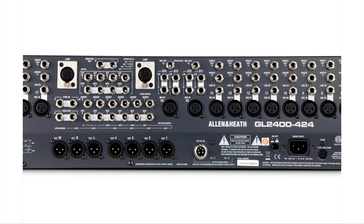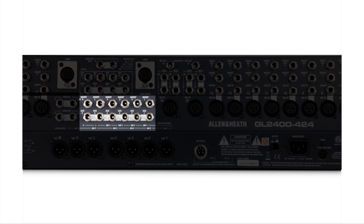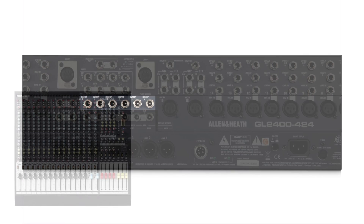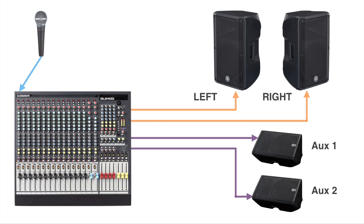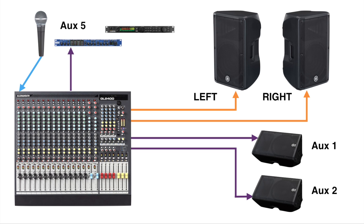To connect the ins and outs of an effect unit, we'll utilize a special section called the insert. The insert acts like an input and an output by using a TRS connection, also known as a tip ring sleeve connection. Part of it will act as a send and part of it as a return. In our setup, auxiliary five is sent to the reverb unit, coming back in on the insert, and auxiliary six is sent to the delay, also coming back in on the insert. So when we adjust five and six, we will hear echo and reverb sent out to our main mix and even to our monitors.